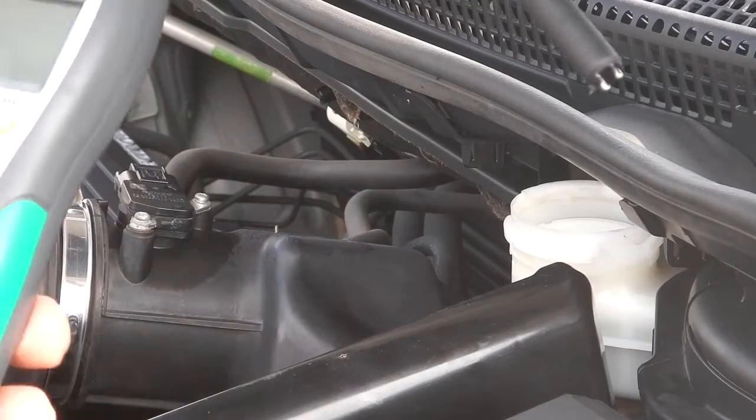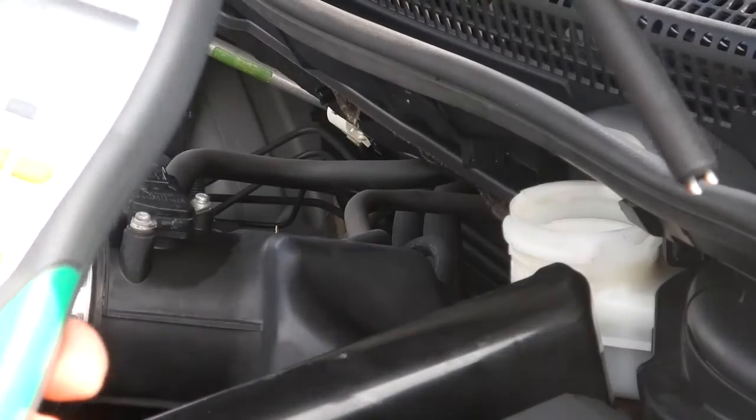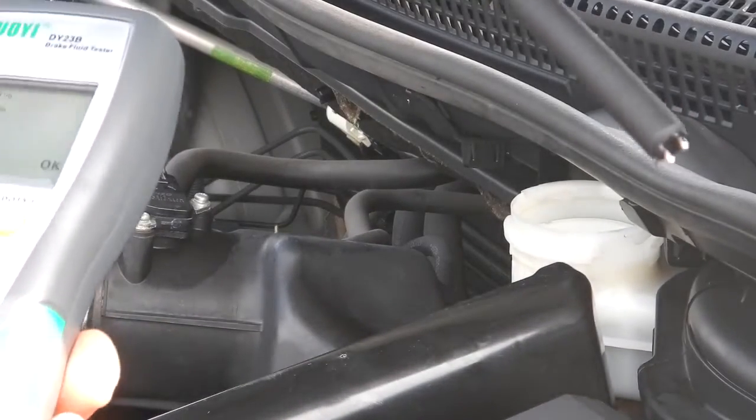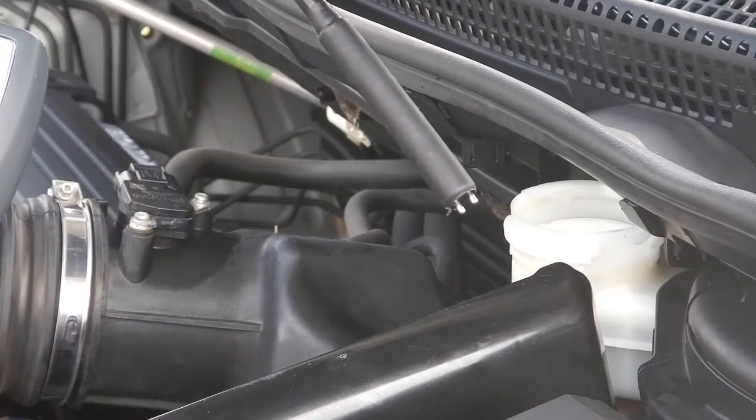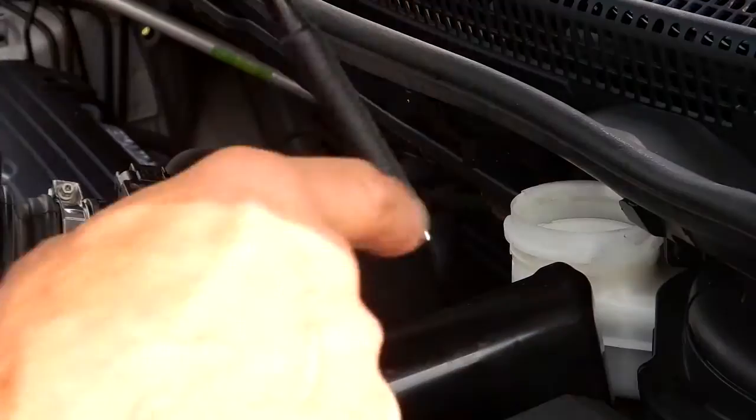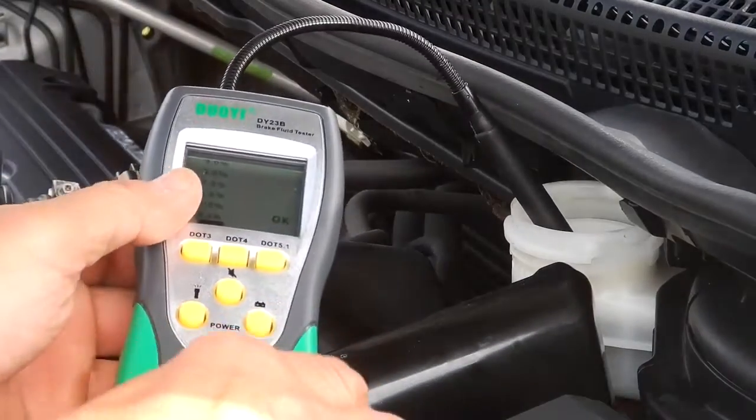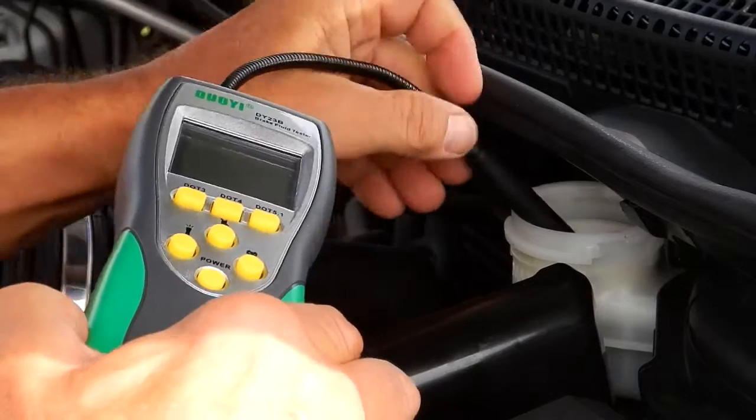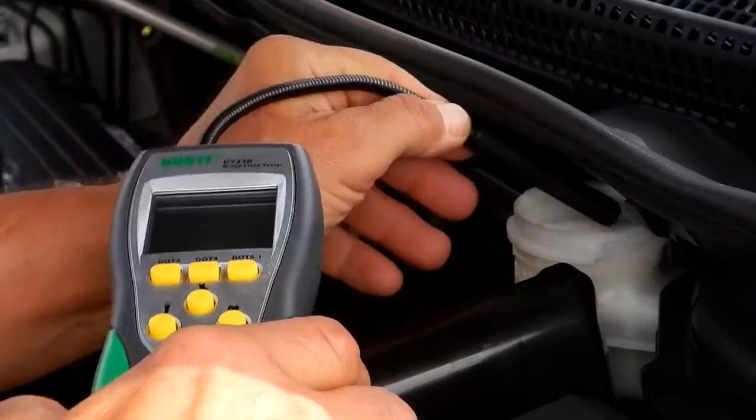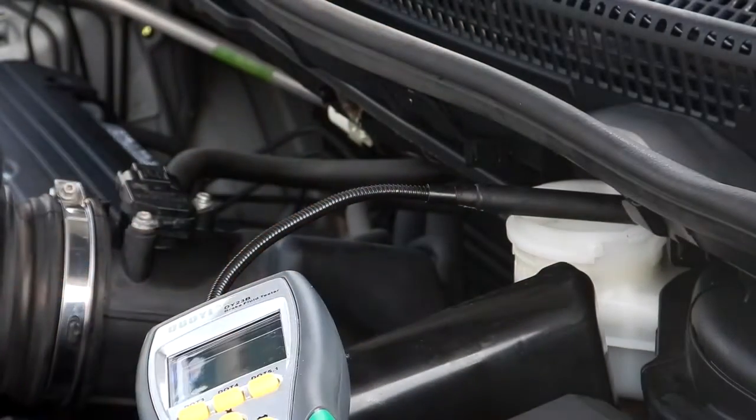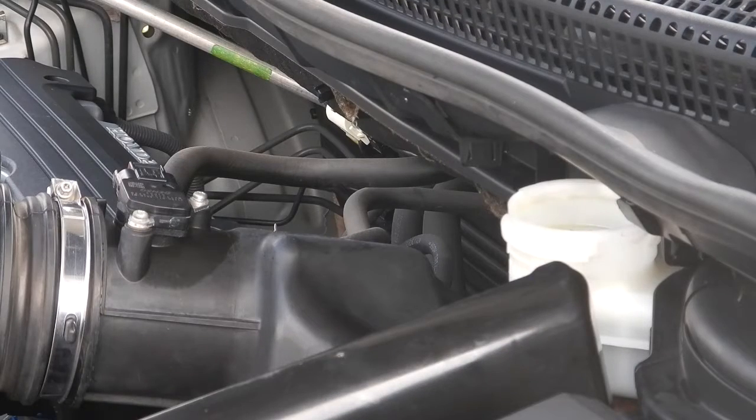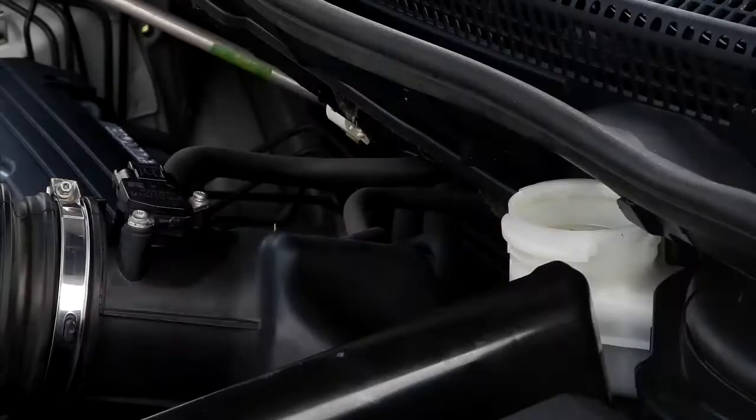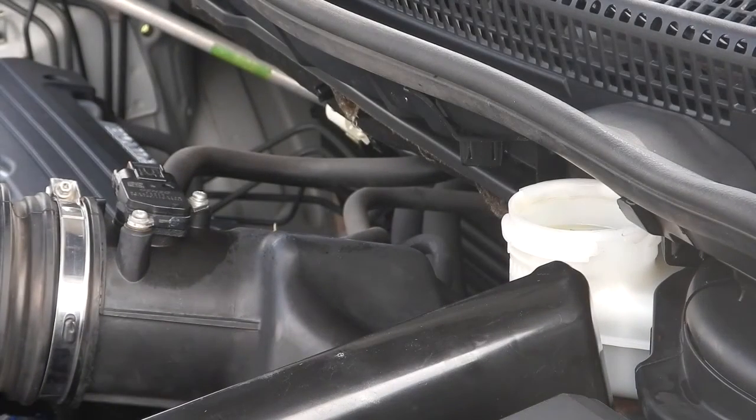All right, so let's zoom in a little bit. And now I'm gonna turn this thing on and I'm gonna set it to DOT 3, because again, I'm not sure what was in the vehicle, but the manual said DOT 3. So let's put that in there. Okay, I've got a strainer I got to take out. Let me take that strainer out of there.